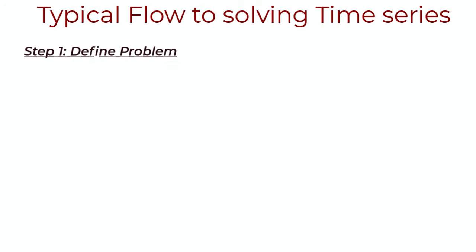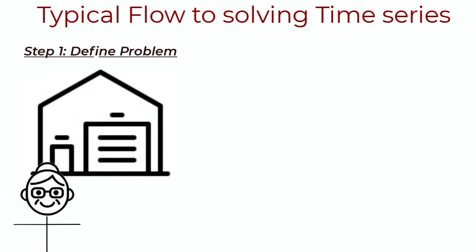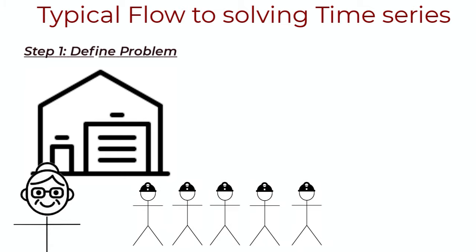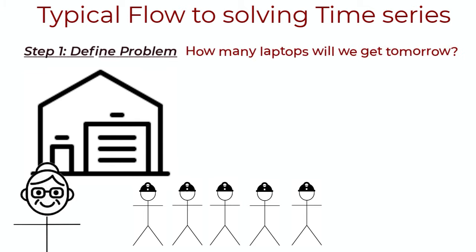Let's first define a concrete problem where time series is useful — that's step one. Think about your grandma. She started this laptop repair line two years ago and it's a hit. A customer places an order request online, ships the broken laptop to grandma, then she and her workers fix them and the laptops are sent back. The problem is her workers are paid by the hour, so if there are more laptops to repair, grandma calls in more workers. It's hard to know how many workers we need without knowing the number of laptops we get per day. Now grandma hired you as a data scientist, and what could be useful is knowing how many laptops we're going to receive tomorrow, so we can call the required number of workers.